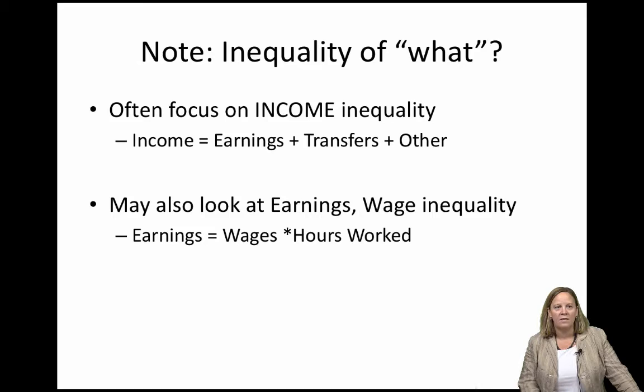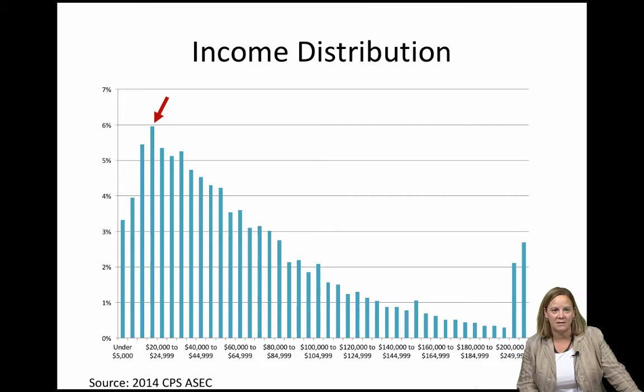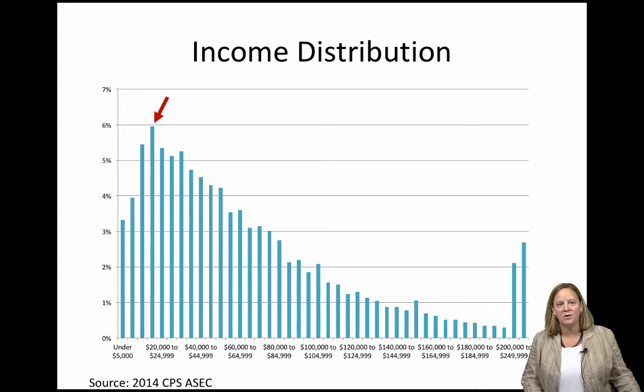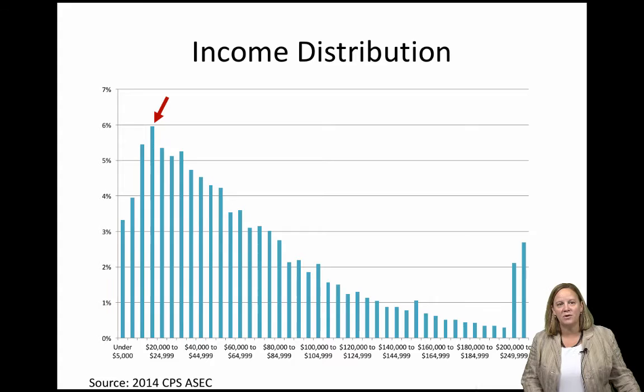This first graph shows a histogram summarizing the distribution of family income in the United States. The height of each bar shows the fraction of the population with family income in the given range. For example, the tallest bar indicated by the red arrow says that in 2014, just under 6% of U.S. families had total income between $15,000 and $19,999. If you add up all the bars up to and including that tall bar, that says that roughly 18% of families have income less than $19,999.